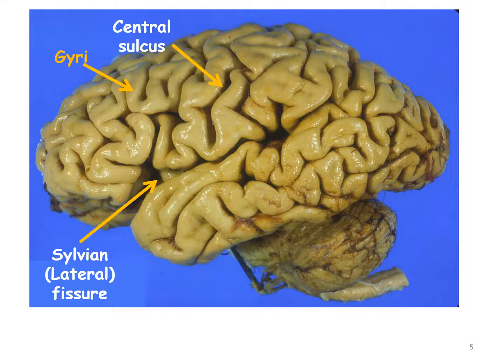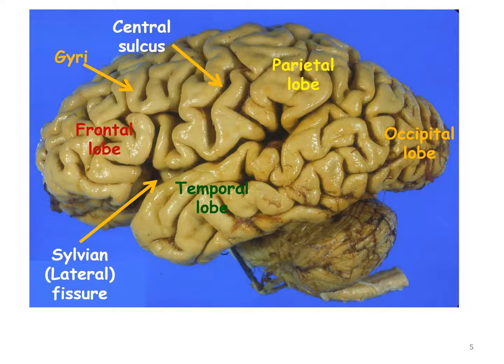Here is the human brain showing the sulci, fissures, and the gyri. You also see the four different lobes: frontal, parietal, temporal, and the occipital. Also seen is the little brain, the cerebellum, at the bottom of the cerebrum.